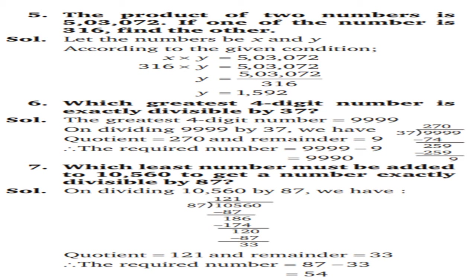7th question: which least number must be added to 10,570 to get a number exactly divisible by 87? On dividing 10,560 by 87, quotient is 121 and remainder is 33. We need to add a number, so the required number is 87 − 33 = 54.